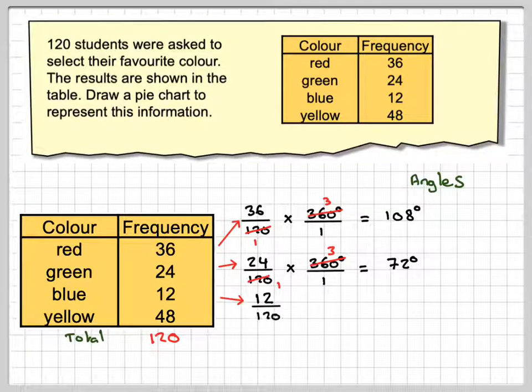And then we'll do 12. So 12 over 120 times 360 degrees. Again, we'll cancel. And 3 times 12 gives me 36.